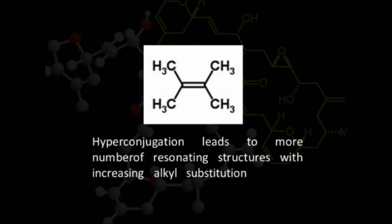We get a large number of resonating structures—three corresponding to each methyl group, giving a total of 13 resonating structures. Therefore, tetrasubstituted alkenes are the most stable, which has also been confirmed through experiments.